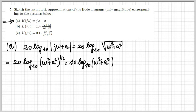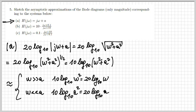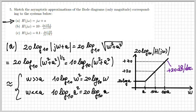To obtain the diagram for H(jω) = jω + a, we calculate 20·log₁₀ of the magnitude. The magnitude is the square root of (ω² + a²), giving 10·log₁₀(ω² + a²). Approximating with two regimes: when ω ≫ a, this is approximately 20·log₁₀(ω); when ω ≪ a, it's 20·log₁₀(a). So there's a cutoff at ω = a. Below that, the value is constant at 20·log₁₀(a); above it, the magnitude grows by +20 dB per decade — 20 dB from frequency a to 10a, another 20 dB to 100a.